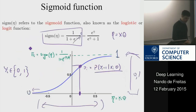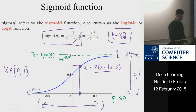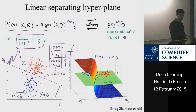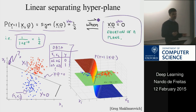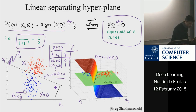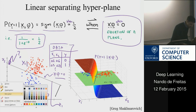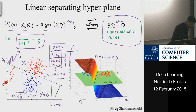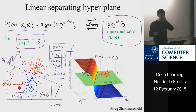Since the argument of the sigmoid η = xᵢθ, the probability is one half when we have the equation of a plane: x₁θ₁ + x₂θ₂ = 0. That gives you this plane here, so the decision boundary is a plane. In machine learning we call this the discriminant. In this case the discriminant is a linear function.